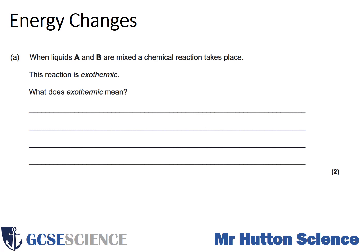This question is talking about two liquids, A and B, mixing together in a chemical reaction. It says the reaction is exothermic. What does exothermic mean? It's asking you to basically define exothermic for two marks, so essentially you're going to have to say two things. Be careful with your wording. Pause the video and attempt the question, then look at the mark scheme afterwards.